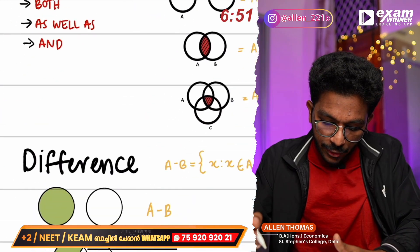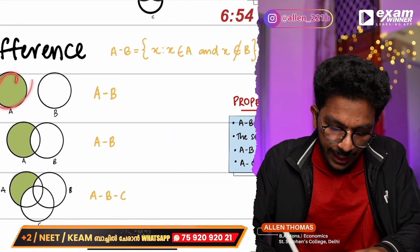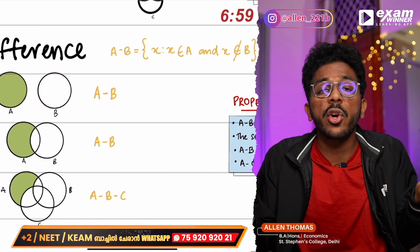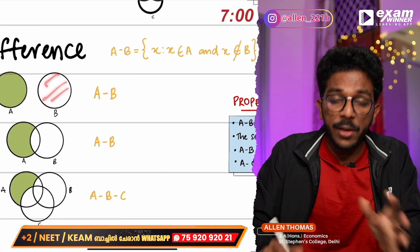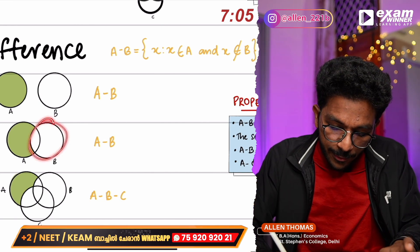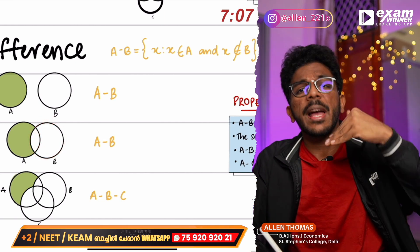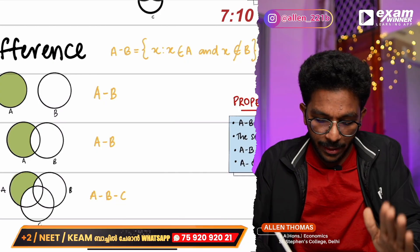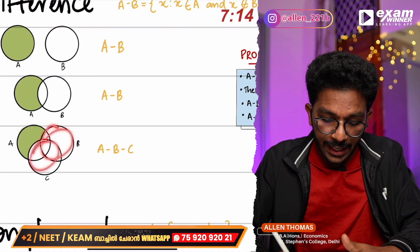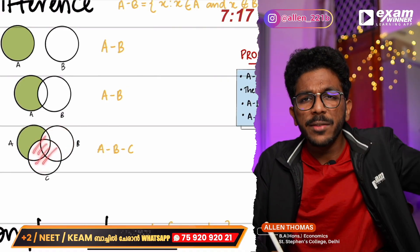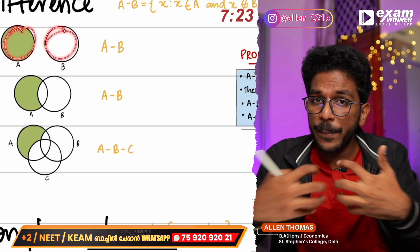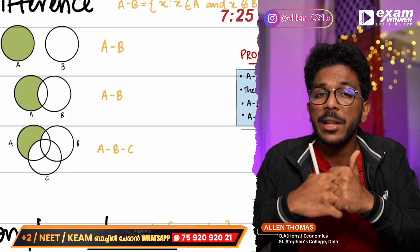The difference operation: A minus B means elements in A that are not in B. If A and B are disjoint sets, they have no common elements. B minus A means elements in B not in A. A-B-C difference means elements in A not in B or C — that is the set difference.